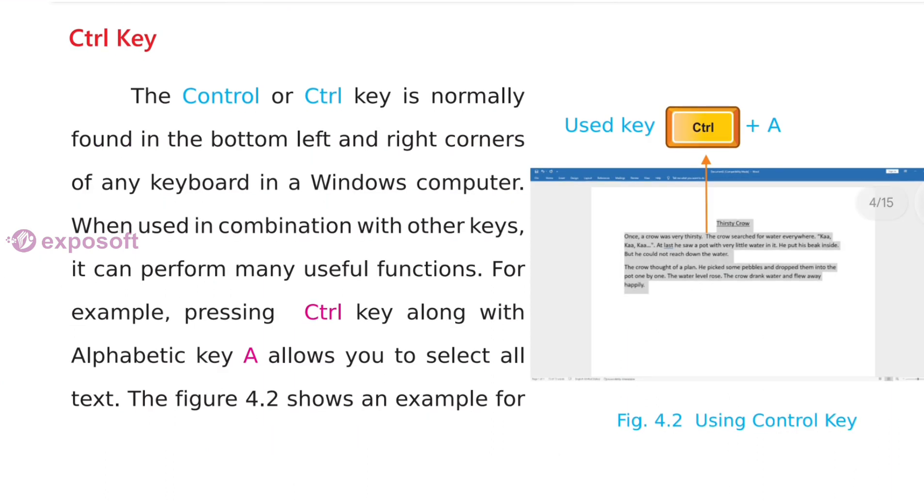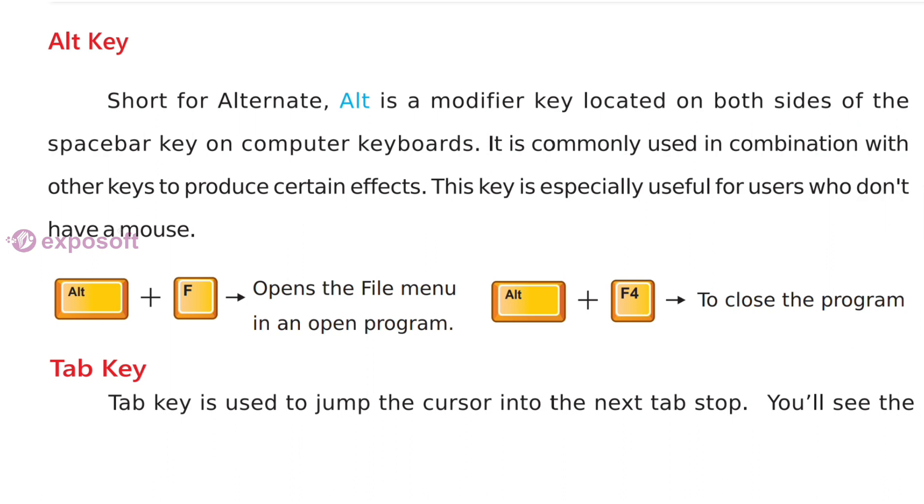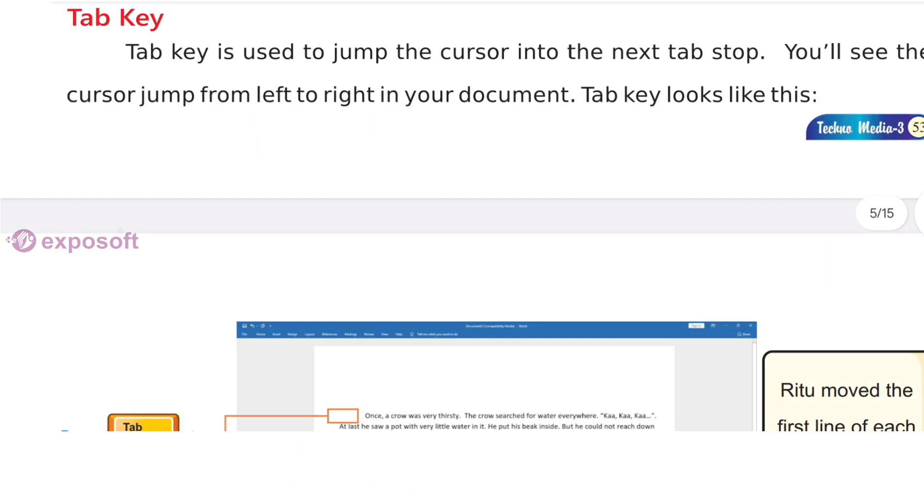Control key: the control key is normally found in the bottom left and right corners of any keyboard in a Windows computer. Alt key: Alt key is a modifier key located on both sides of the space bar key on computer keyboard. Tab key: Tab key is used to jump the cursor into the next tab stop.